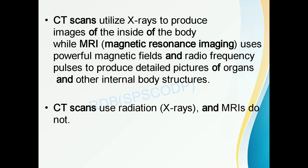The difference between CT scan and MRI: CT scan utilizes X-rays to produce images of the inside of the body, while MRI uses powerful magnetic fields and radio frequency pulses to produce detailed pictures of organs and other internal body structures. CT scan uses radiation whereas MRI does not use any radiation — it uses magnetic fields.